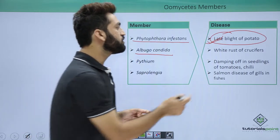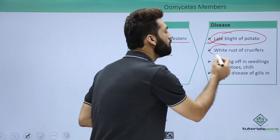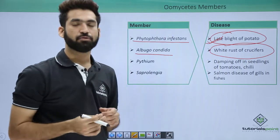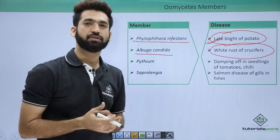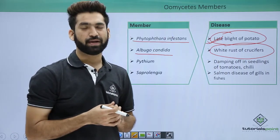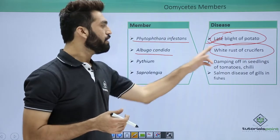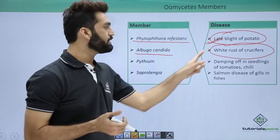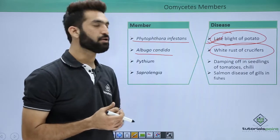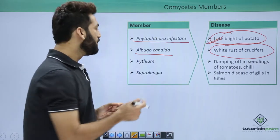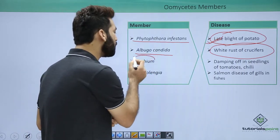The second oomycetes member is Albugo candida, which causes white rust of crucifers. You must know about the Cruciferae family, which is also called Brassicaceae. Among Brassicaceae members, white rust is caused by Albugo candida.